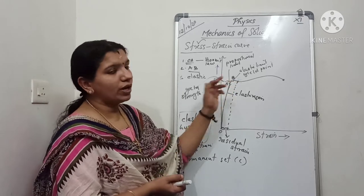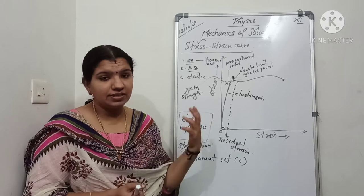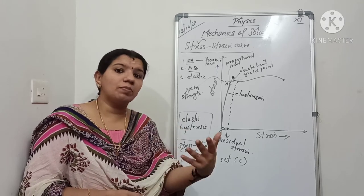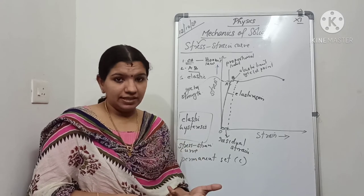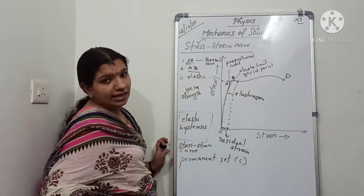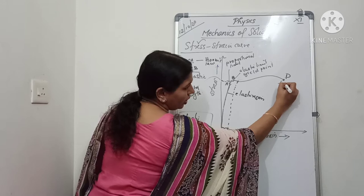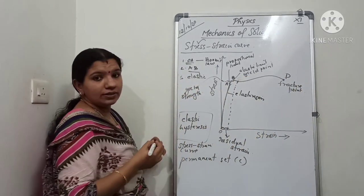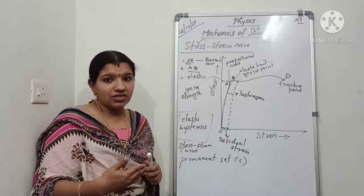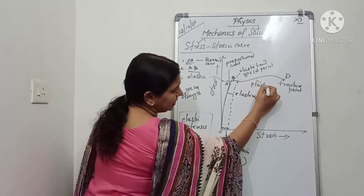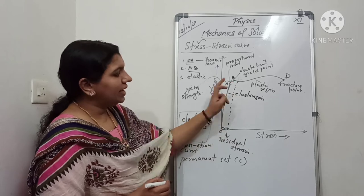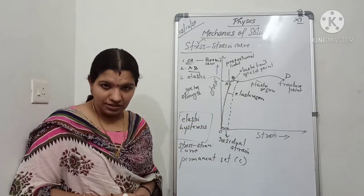After point C, large strain is produced inside the wire. Even if we apply only a small amount of stress, or even without applying stress, the length of the wire goes on increasing. Finally, when it reaches a point called D, the wire breaks. Point D is called the fracture point. From B to D, the body has attained another shape and cannot come back to its original shape — this region is called the plastic region.